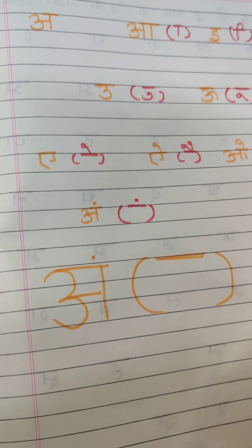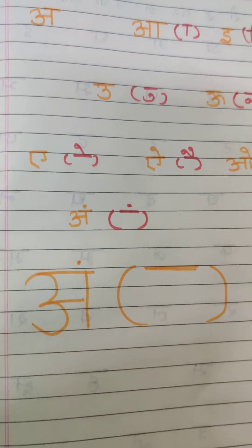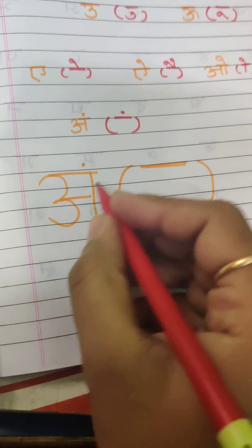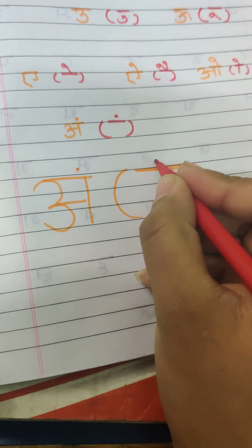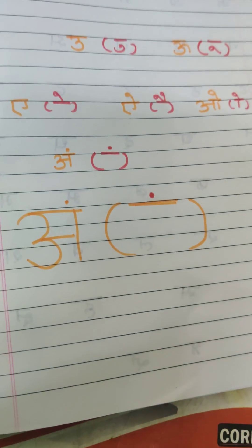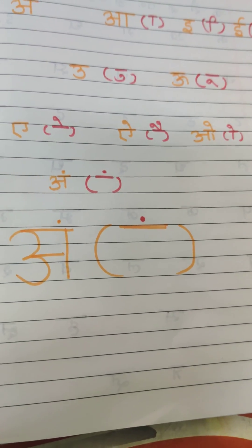The anuswar sounds like 'ng'. So this is anuswar — it comes above the letter as a dot like this.